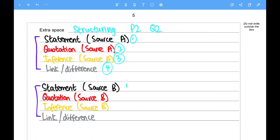And then paragraph two, same thing. You provide a statement for Source B, a quotation for Source B, provide inference. Make sure you're perceptive and detailed with your inference. And finally, you show a link or difference in terms of Source A and Source B.